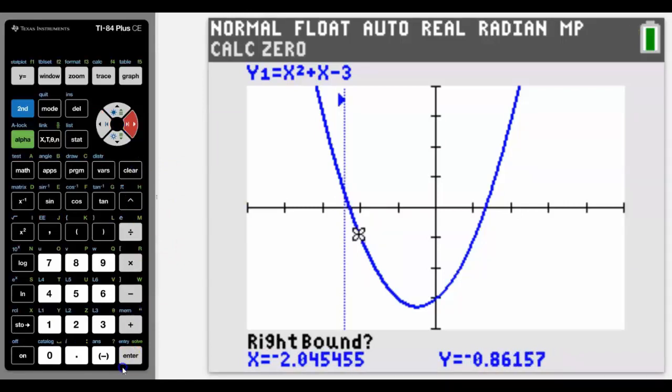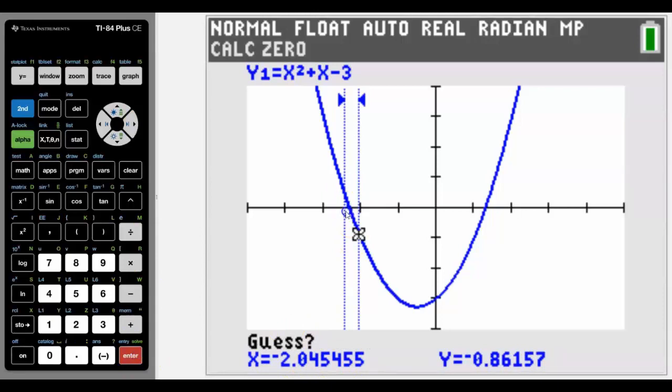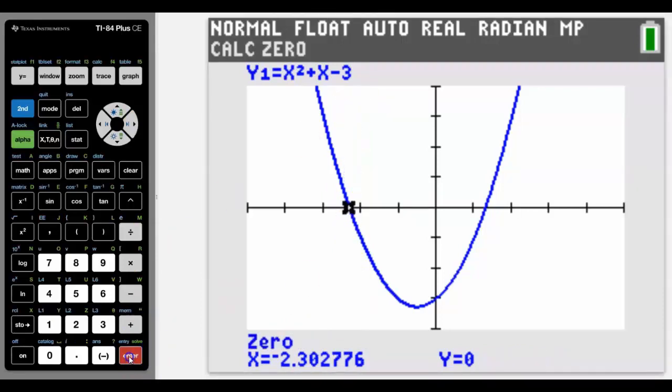Come to the right of where it crosses. Press enter. We don't need to guess because there's only one zero in here and the arrows are in the right spots. We can press enter and there's the zero x equals negative 2.302.